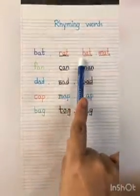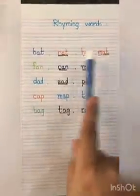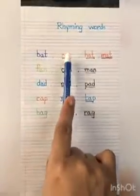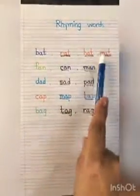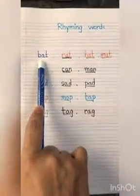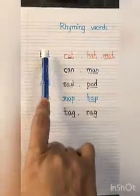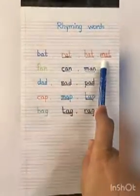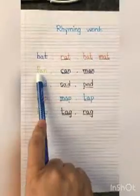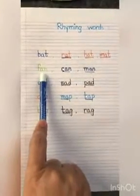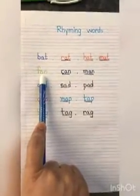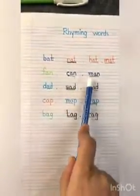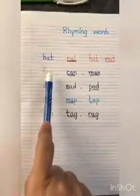Bat: rat, hat, and mat. What are the rhyming words of bat? Rat, hat, and mat. Next, fen: can and men are the rhyming words of fen.